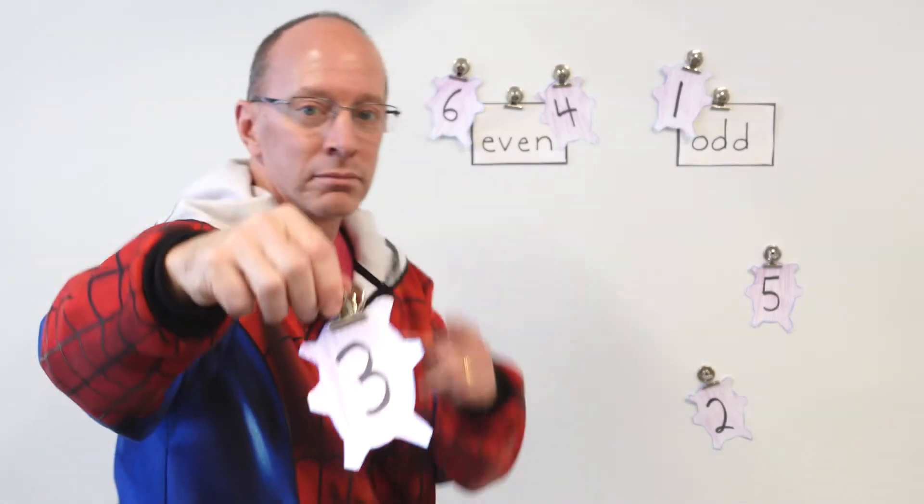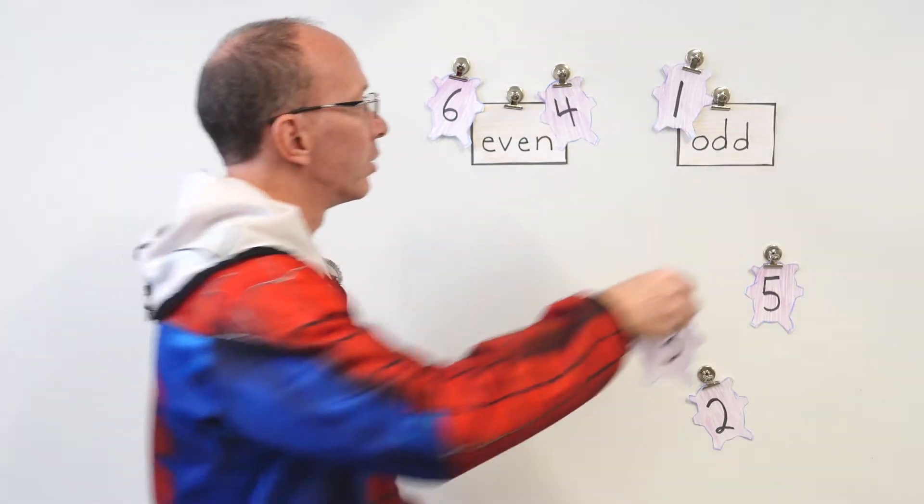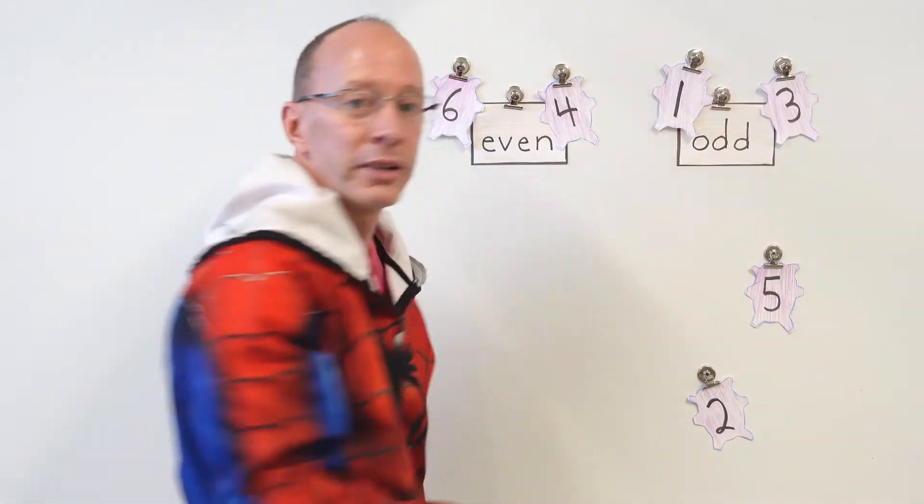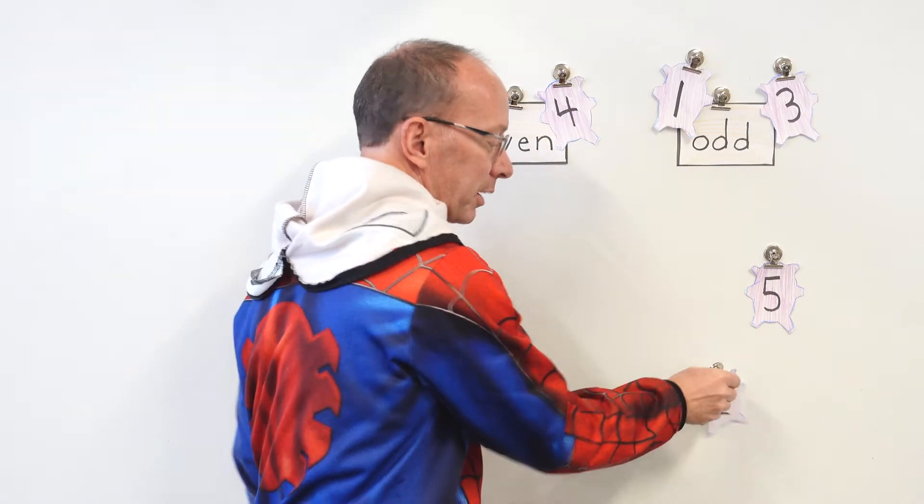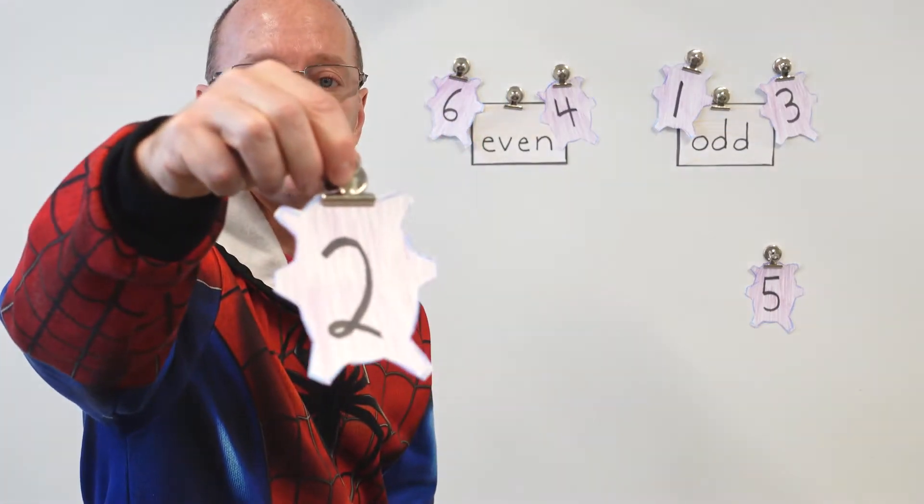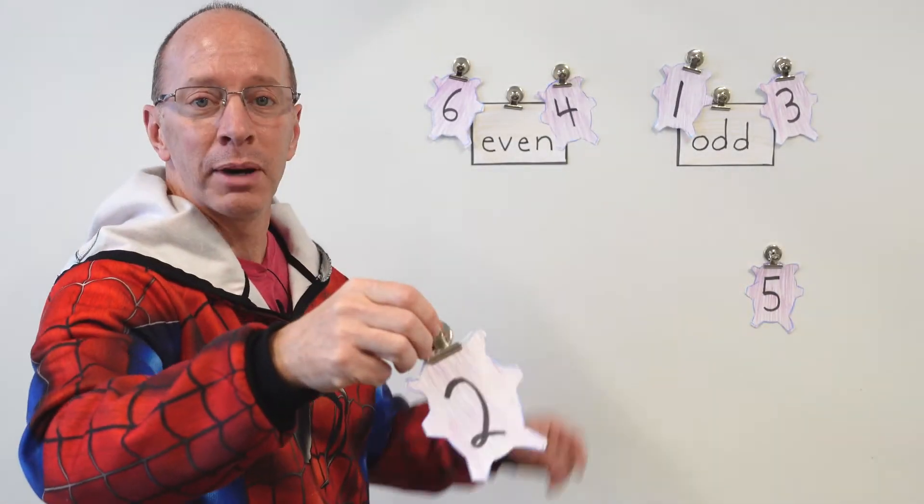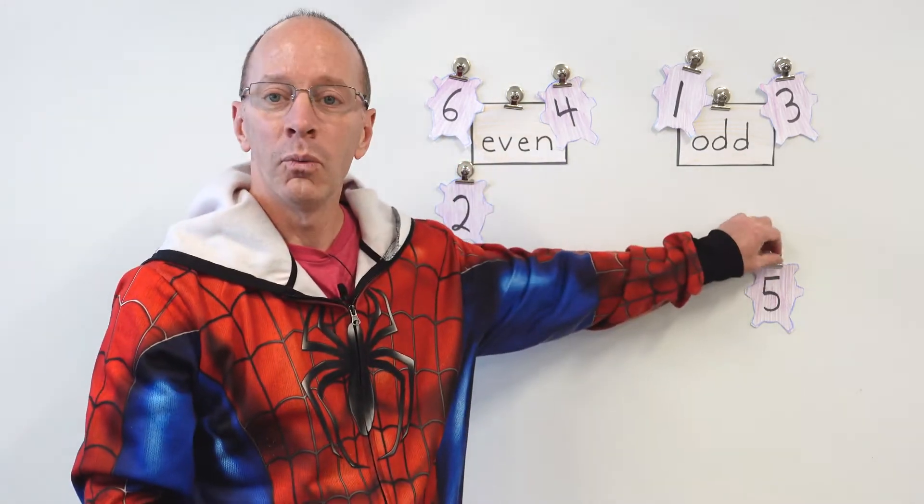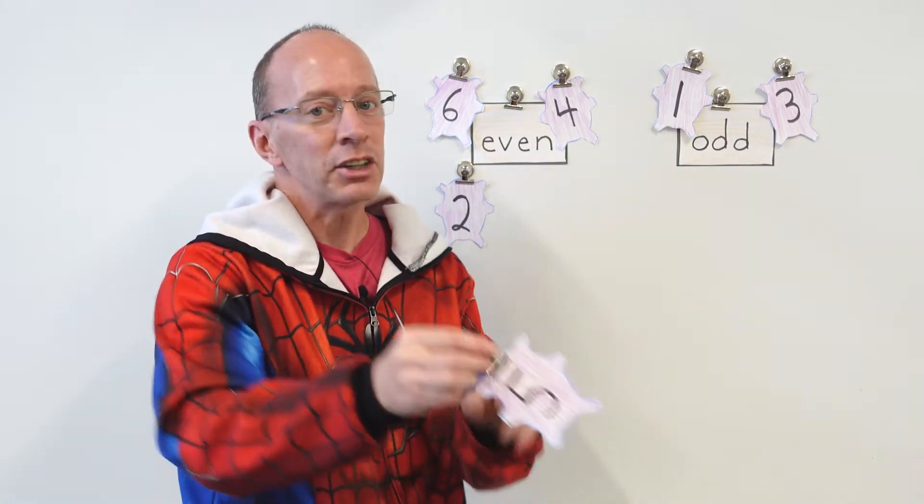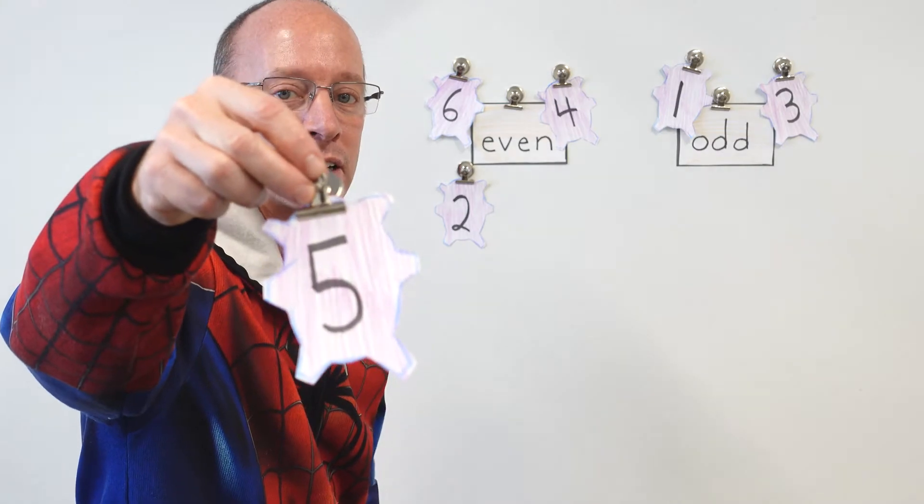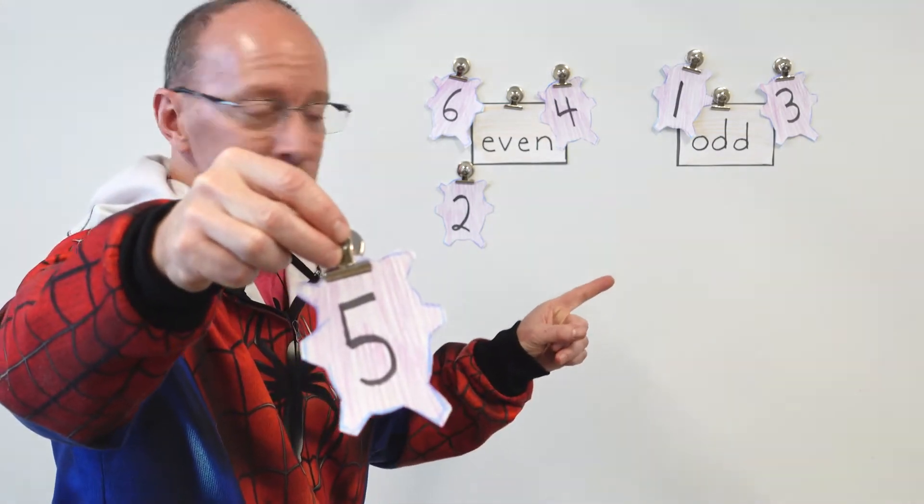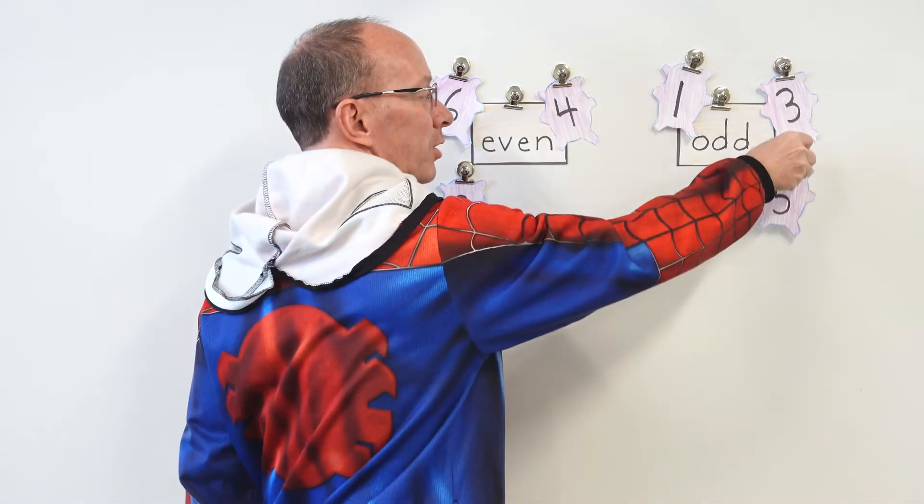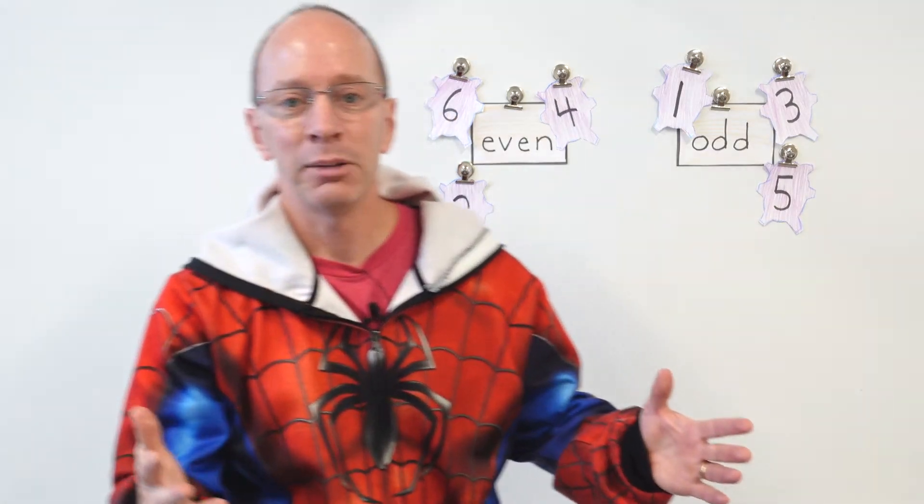Here is the number 3. Boy, you are super smart. Goes right over here in the odd box. 3 is an odd number. Here we go. Number 2. That's right. Goes in the even box. 2. Dos. 2. And one last one. Cinco. Number 5. Where does that go? Over there? Are you sure? You're right. Goes right over here in the odd box.